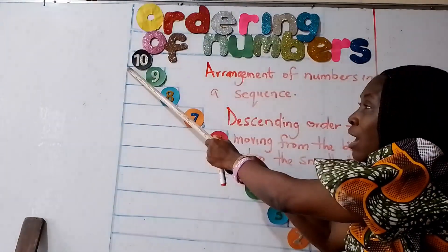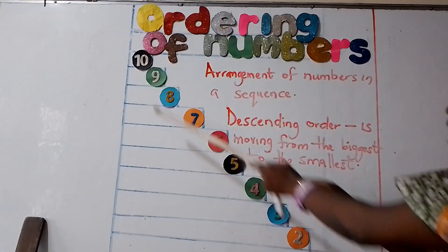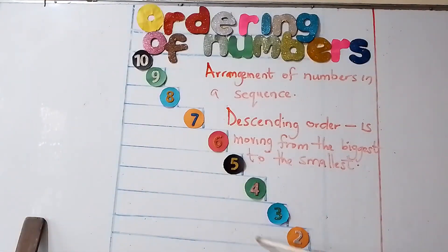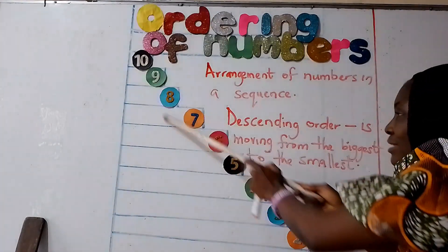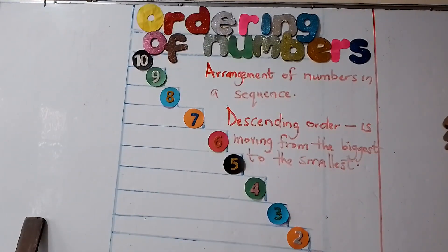You notice I am descending down the stairs. I descended the stairs. I came down the stairs from number 10 to number 1.